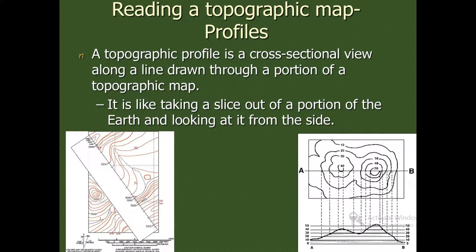Topographic map profile: a topographic profile is a cross-sectional view along a line drawn through a portion of a topographic map. It is like taking a slice out of the portion of the Earth and looking at it from the side. If we take a profile of a place, then we will be able to see the different elevations of the area.